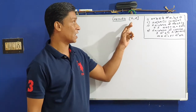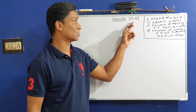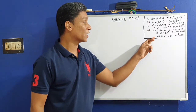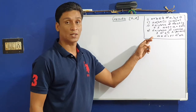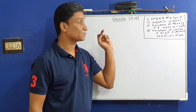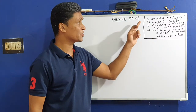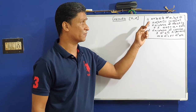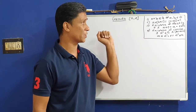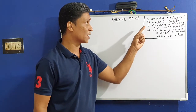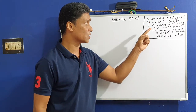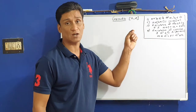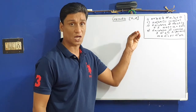A group is an algebraic structure (G, ★) where four conditions are satisfied. First: A★B is an element of G for all A, B element of G — this is the closure property. Second: A★(B★C) = (A★B)★C — associativity of the operation star.